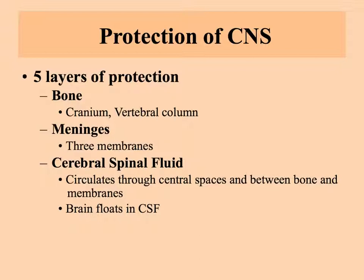The central nervous system is quite highly protected. Since this is such an important part of your body, it would make sense that there would be lots of protection. The layers of protection start with bone — the cranium and the vertebral column surrounding your central nervous system. The neural tissue is surrounded in meninges, which are three distinct membranes. They are also cushioned by the cerebral spinal fluid, which circulates through the entire central nervous system — through central spaces in both the brain and the spinal cord, and also between the bone and the membrane.